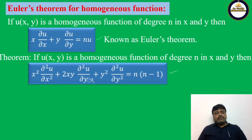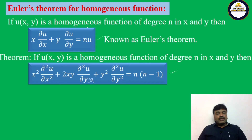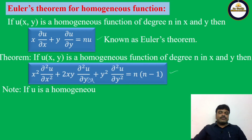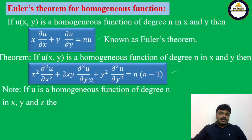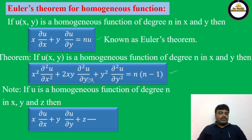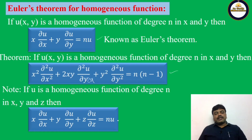You may have a doubt: if u is a function of x, y, z, then what is Euler's theorem? If u(x,y,z) is a homogeneous function of degree n in x, y, z, then x·∂u/∂x + y·∂u/∂y + z·∂u/∂z = n·u.